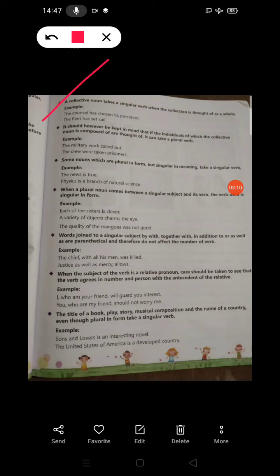A collective noun takes a singular verb when the collection is thought of as a whole. For example, the council has chosen its president. The fleet has set sail.